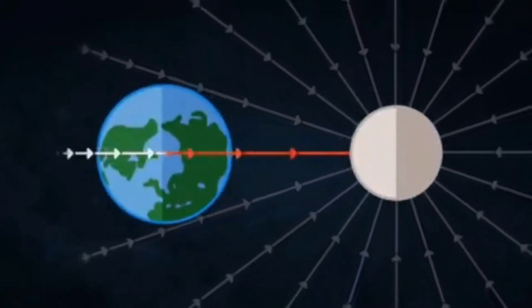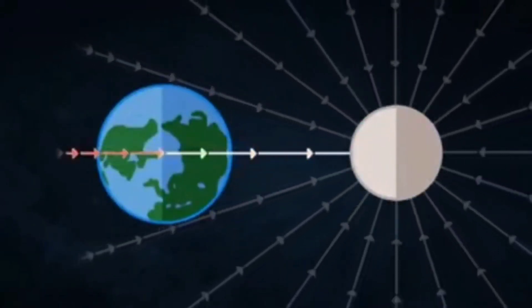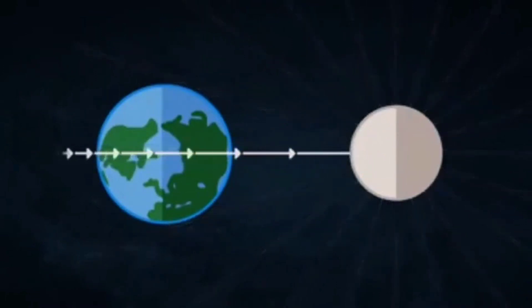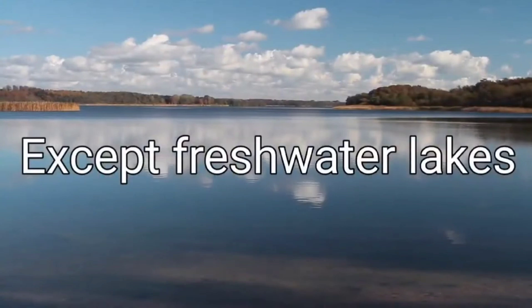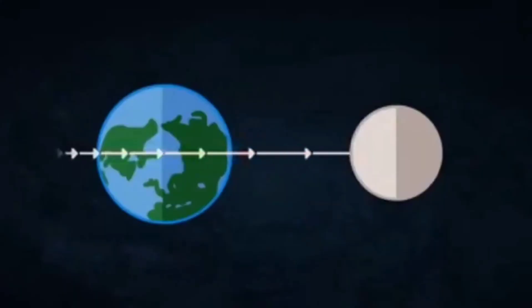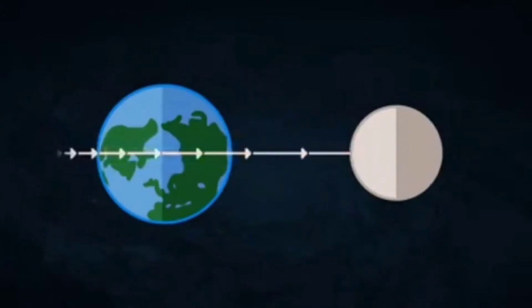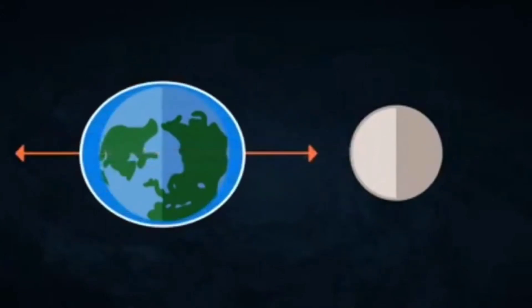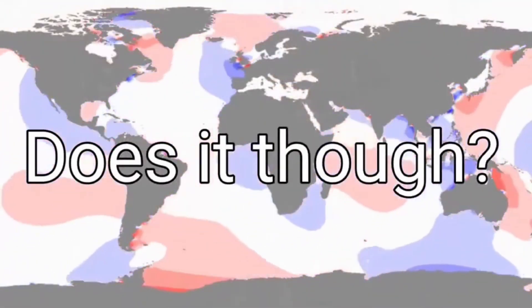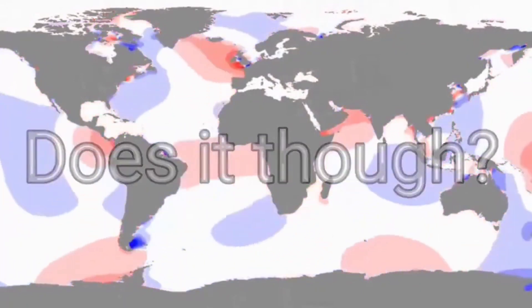The side of the earth closest to the moon feels a stronger gravitational pull than the far side — the closer you are to the source of gravity, the stronger the force. That's true for everything. Because of this difference in gravitational pull from one side to the other, it ends up stretching the earth, and the water stretches along the line that the moon's tidal forces are pulling — it's a stretching force.